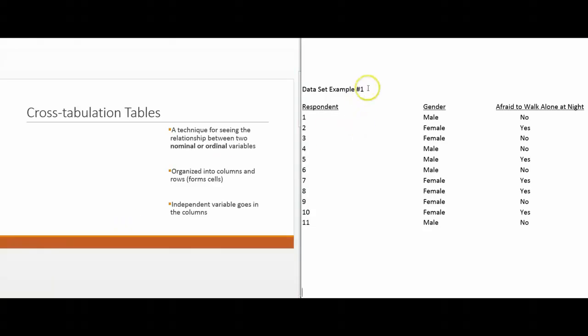For instance, over here to our right, in our first dataset example, we have two variables: gender and afraid to walk alone. Notice that they're both nominal variables. We're going to create a cross-tabulation table. The first step is to list our independent variable values. Looking at gender and afraid to walk alone at night, I'm thinking that gender is the independent variable.